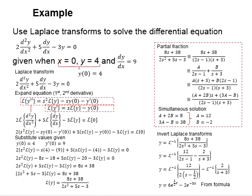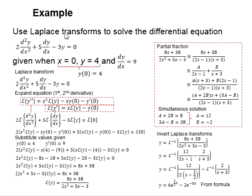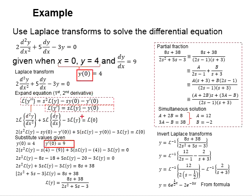It is given that x is equal to 0 when y is equal to 4, which means y(0) will be equal to 4. At the same time, dy/dx will be equal to 9, which means y'(0) will be equal to 9.